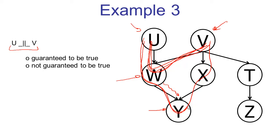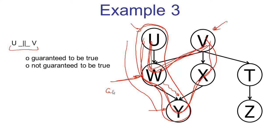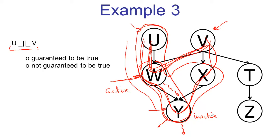Let's move on to the second path. The second path has several triples along it. The first triple, u, w, y, is a causal chain with the middle node unobserved, which means it's active. The next triple, w, y, x, is a v-structure with the middle node unobserved. We check its descendants — there are no descendants — so none of the descendants are observed, meaning this v-structure is inactive. Once we find an inactive triple along a path, we know the entire path is inactive. Path one and two are the only two paths connecting u and v, so all paths are inactive. This means we are guaranteed that u and v are independent.